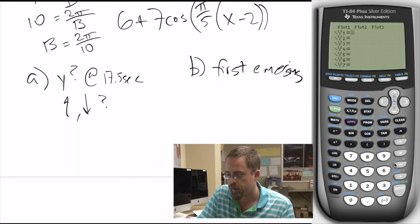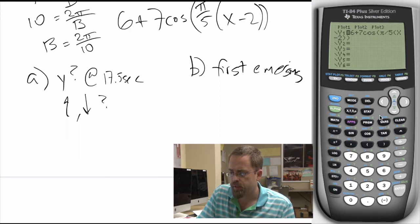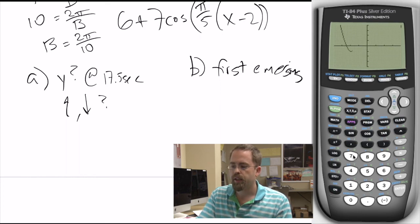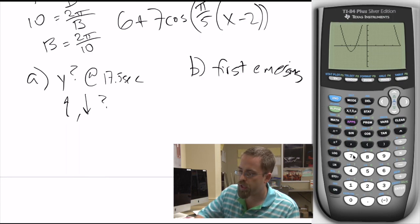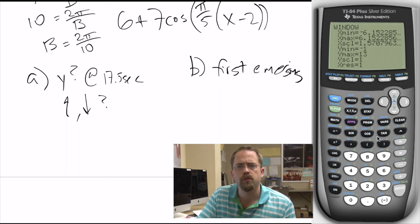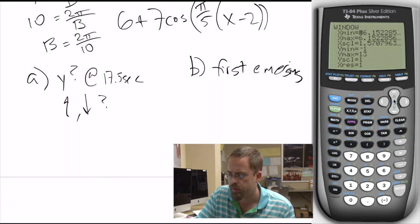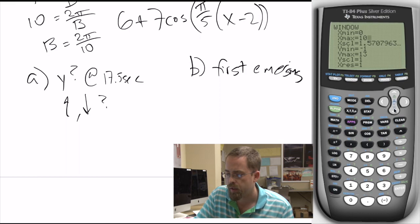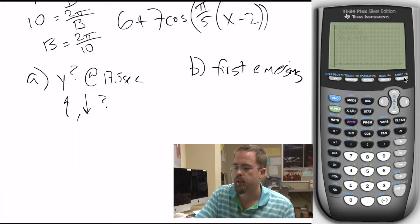We need to put the equation in: 6 plus 7·cos(pi/5·(x minus 2)). Let's see if zoom trig is any good — it probably isn't. Zoom trig is no good. We think back to our graph where the highest it ever gets is 13 and the lowest is negative 1. We usually don't care about times before the start, so let's start at 0 and go to 10, with tick marks every 1. There's a much more helpful window for us.